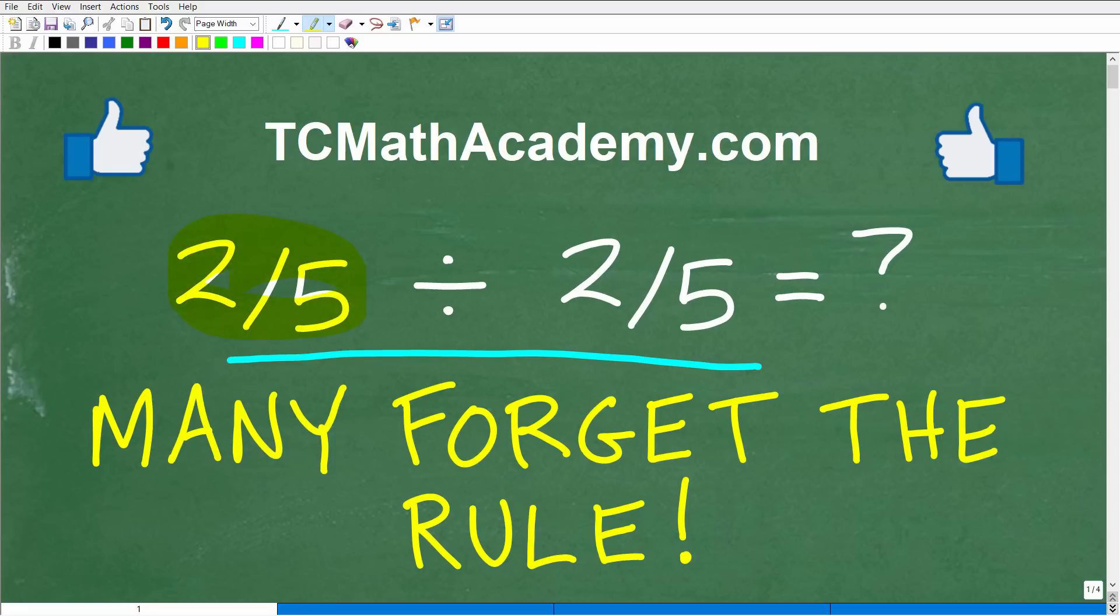What we have is two-fifths, or we have a number expressed as a fraction, divided by itself. So we have a number divided by itself. What is the answer?